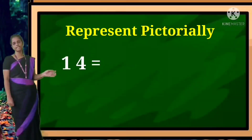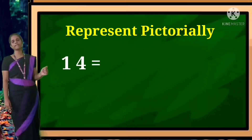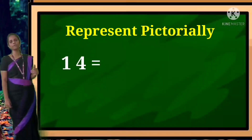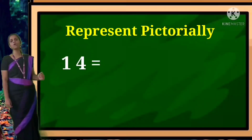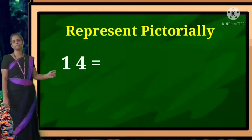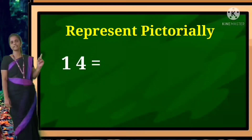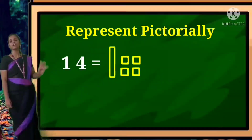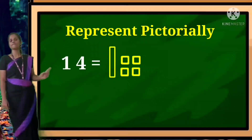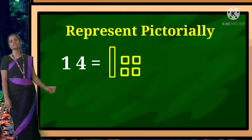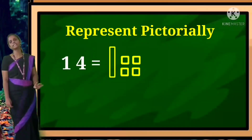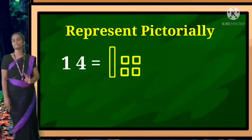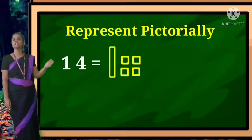The next sum is fourteen. How will you draw it? Ten is in tens place — one thin strip box. And four is in ones place — four small boxes. So draw one thin strip box and four small boxes. Represent pictorially means we will give you the numbers and you have to draw the boxes.